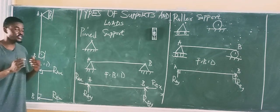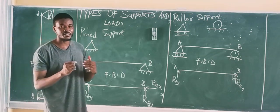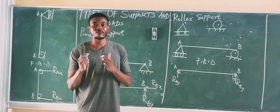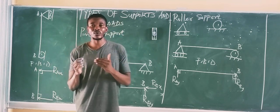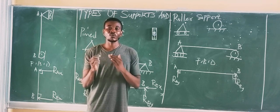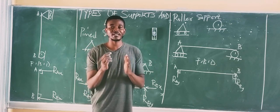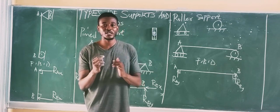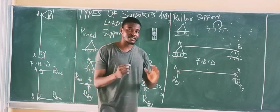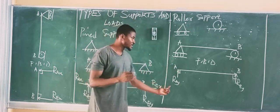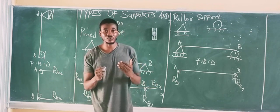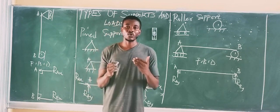That is how the Roller Support differs from the Pinned Support. The Pinned Support always has two reactions — one vertical and one horizontal. Meanwhile, the Roller Support always has one reaction, but it must always be at 90 degrees to the surface. For a horizontal beam, the roller reaction is vertical; for a vertical beam, the roller reaction is horizontal.